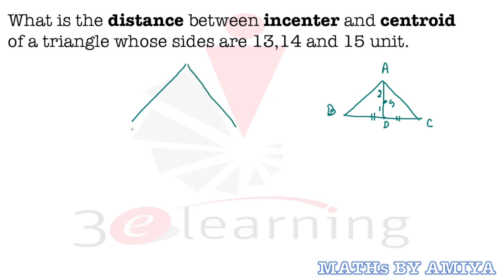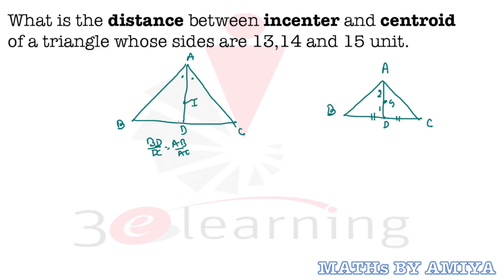The second concept is the angle bisector. If ABC is a triangle in which AD is the angle bisector, then BD upon DC equals the ratio AB upon AC — the left-right ratio equals the left-right base ratio. If I is the incenter, then AI upon ID is equal to (b + c) upon a, where AB = c, AC = b, and BC = a.